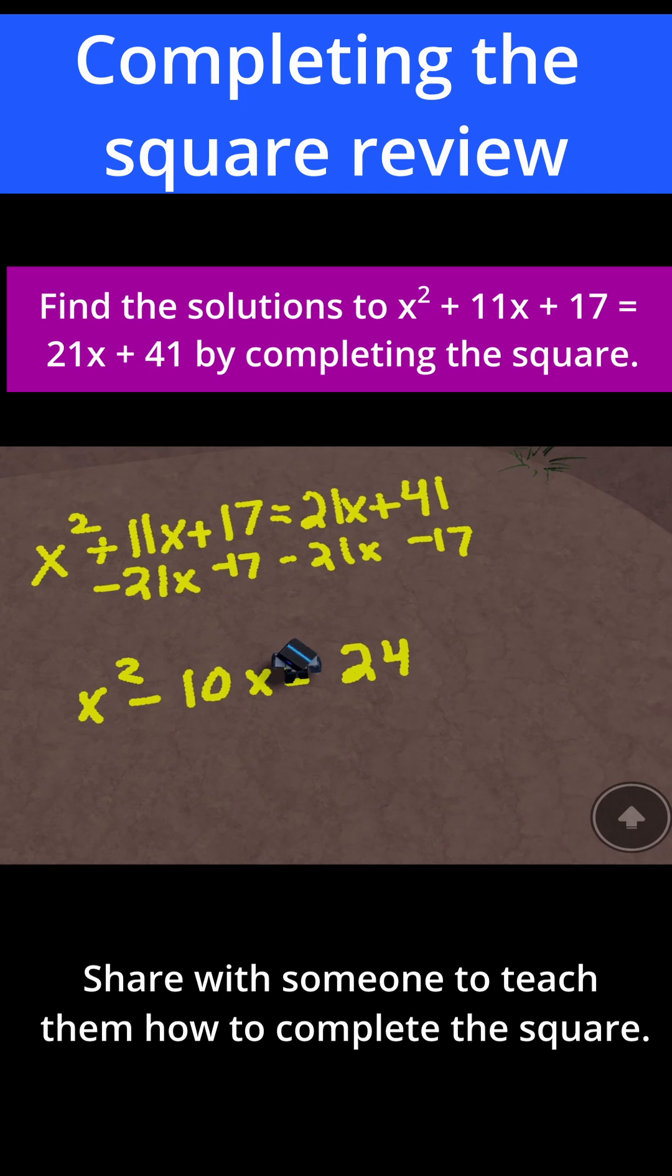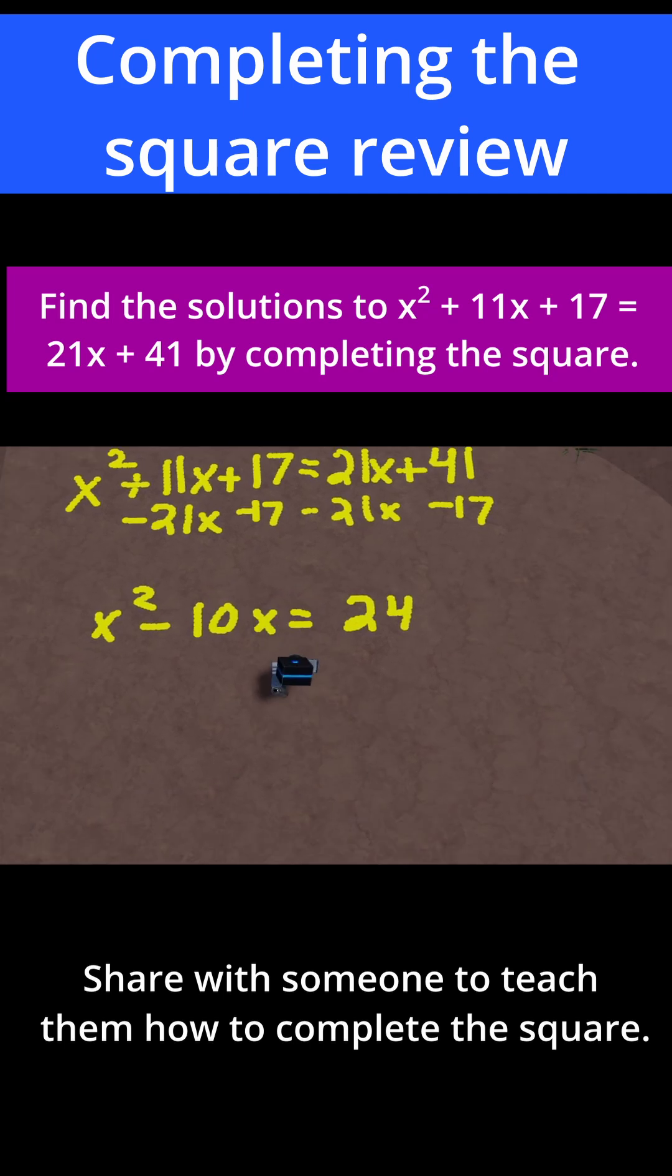Now, we're ready to complete the square. To complete the square, take the x term coefficient of minus 10 and divide it by 2. Minus 10 divided by 2 is minus 5. Then, you have to square that number. So minus 5 squared is equal to positive 25, and that's the number we're going to add to both sides to complete the square.